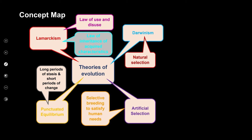Let's have a look at the concepts or aspects we're going to cover in this topic. In the theories of evolution, we're going to have a look at Lamarckism, Darwinism, punctuated equilibrium, and then artificial selection.